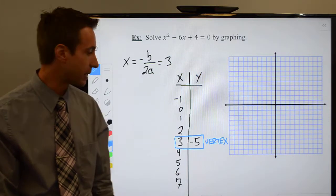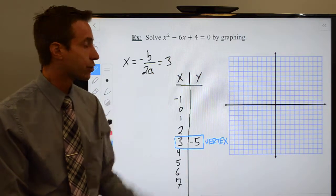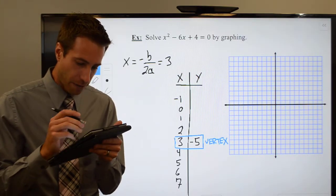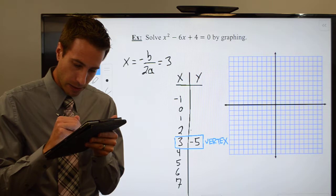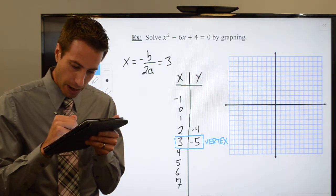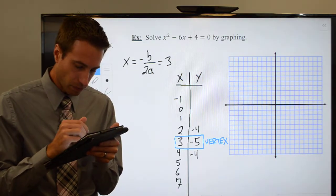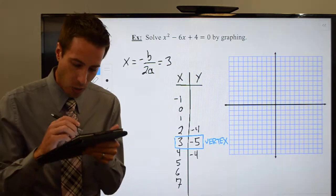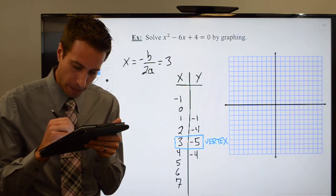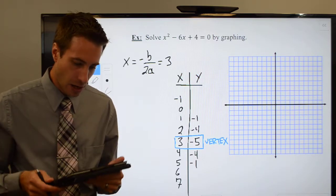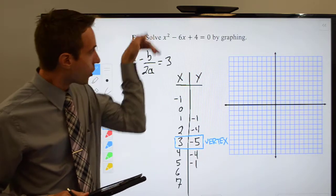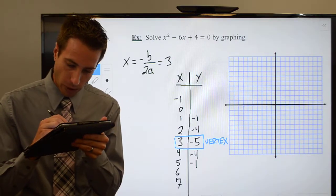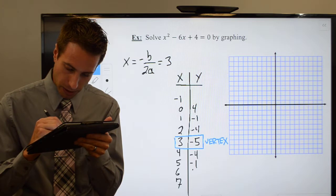I'll do these guys because they'll be a little bit easier to do math with. I plug a two in for all my values of x and I wind up with a negative four. Go ahead and plug a one in — when you plug in a positive one, I wind up with a negative one. Plug in a zero, those first two terms drop out, and you should get a positive four.